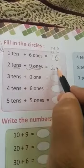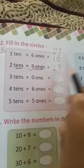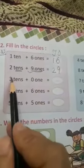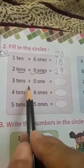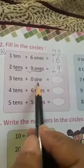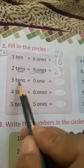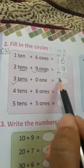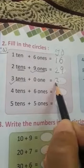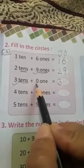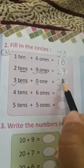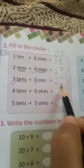Ones के नीचे क्या लिख देंगे? 9. तो क्या बन गया यह? 29. Next: 3 Tens plus 0 Ones. अब Tens कितने हैं? 3. Tens के नीचे 3. और Ones कितने हैं? 0. Ones के नीचे 0. तो यह क्या नंबर बन गया? 30.